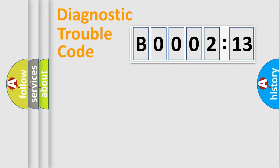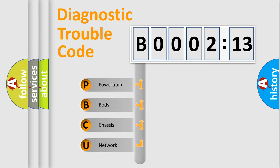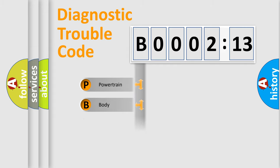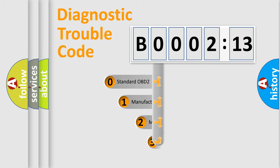Let's start by looking at the history of diagnostic fault code composition according to the OBD2 protocol, which is unified for all automakers since 2000. We divide the electric system of an automobile into four basic units: Powertrain, Body, Chassis, and Network. This distribution is defined in the first character of the code.